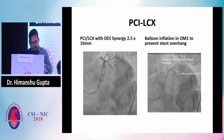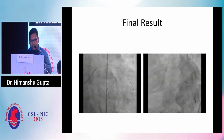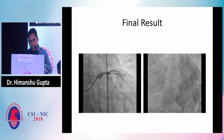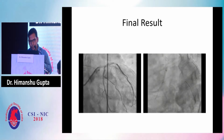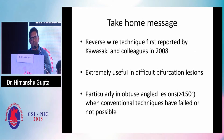This was the final image showing PCI to LCX and PCI to OM1. While stenting the LCX, we also ballooned OM1 to prevent stent overhang. The final result showed well-expanded stents. The take-home message is: the reverse wire technique was first described by Kawasaki and Calix in 2008. It is an extremely useful procedure in difficult bifurcation lesions, particularly in obtuse angle lesions with more than 150 degrees of angle, where conventional wiring techniques have failed.